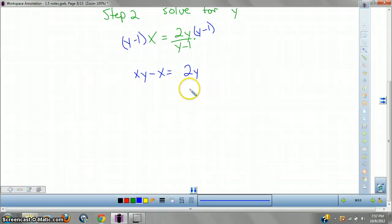So we're going to multiply both sides by Y minus 1, so we get XY minus X equals 2Y, right? Now here's the tricky part. Get all your Y's to one side, okay? So let's get all our Y's to one side. So we get negative X equals 2Y minus XY, right? And now factor your Y out.